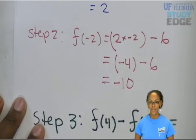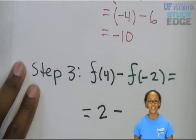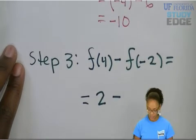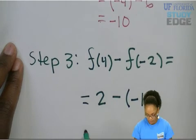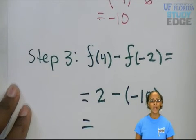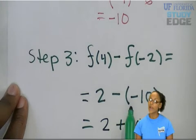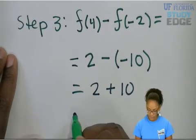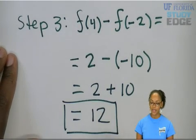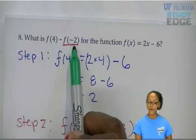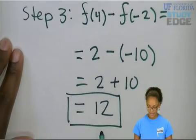And what did we find for f(-2)? f(-2) is equal to -10. Negative 10 is very important. So 2 minus -10. 2 minus -10 is just the same as 2 plus 10, right? When you minus a negative, it's like adding it. So 2 plus 10 is equal to 12. So the original question, f(4) minus f(-2) is equal to 12.